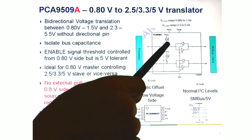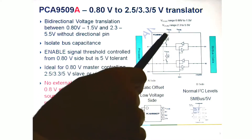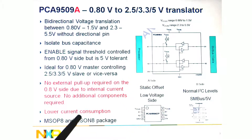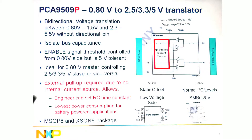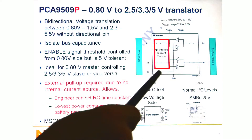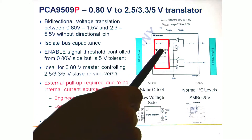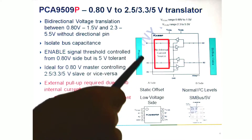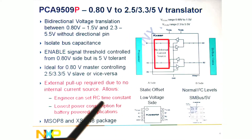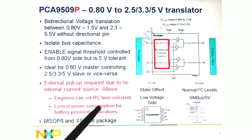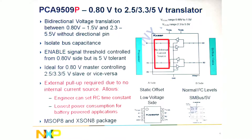The 9509A still has the current sources within the device but is designed for lower current consumption. The 9509P is just like the 9509A but has no current sources within the device, so you need external pull-up resistors. This allows the engineer to set the RC time constants, and it's the lowest possible power consumption because you can use really high value resistors for the pull-ups.